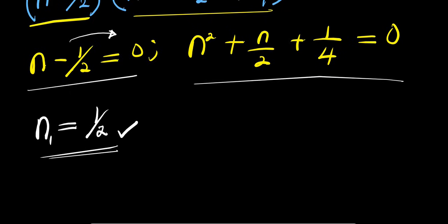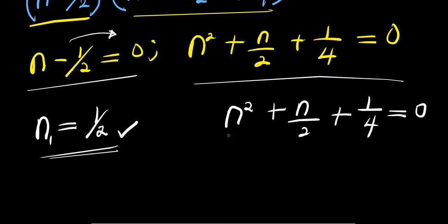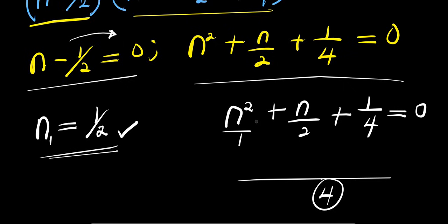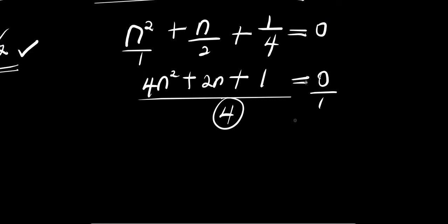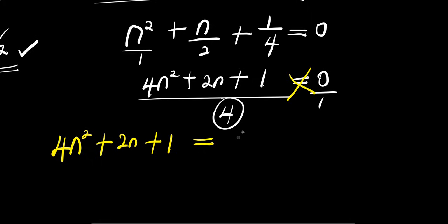Now for the second factor, n squared plus n over 2 plus 1 over 4 equals 0. I can find a common LCM. The LCM is 4. So multiplying through: 4n squared plus 2n plus 1 equals 0.